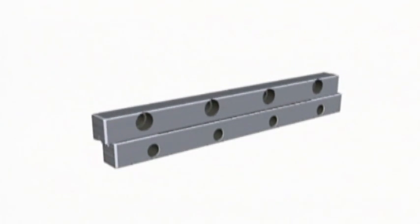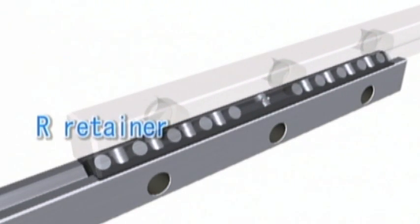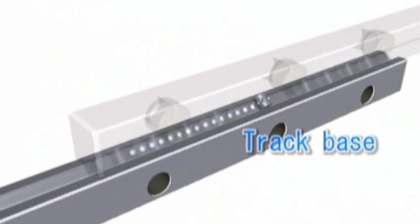The Nippon Bearing Slideway NV type and the NVT type each consist of a resin R retainer with a built-in stud roller and a track base precisely ground for the stud roller to move smoothly.